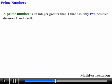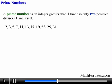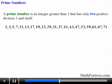The first 20 prime numbers are 2, 3, 5, 7, 11, 13, 17, 19, 23, 29, 31, 37, 41, 43, 47, 53, 59, 61, 67, 71 and so on.